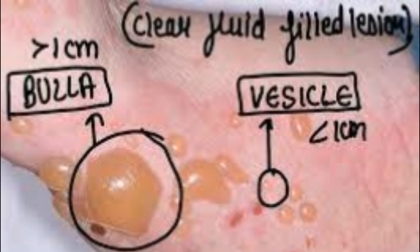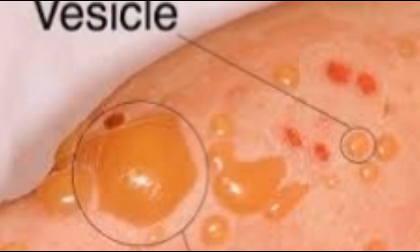The vesicular dermatoses are classified regarding the location of the vesicle in relation to the epidermis, as well as the mechanism of blister formation. Regarding location, vesicles and bullae are classified as subcorneal, intraepidermal, or subepidermal.